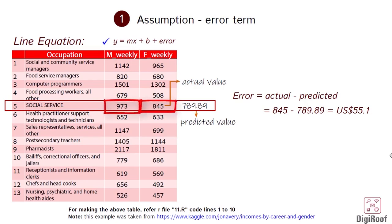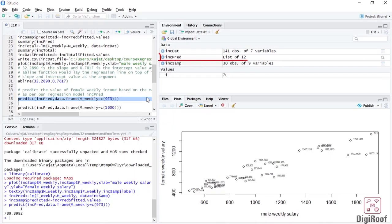Now, let's go to R. Here we have made a regression model INCPRED using INCSAMP data of 30 rows. We then predicted the value of female weekly salary for the social service occupation as per the regression model using the predict function.